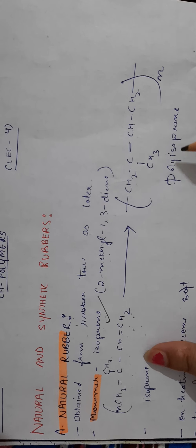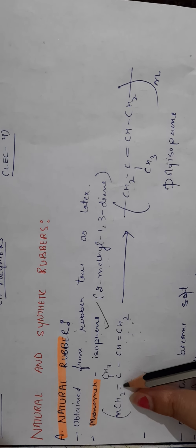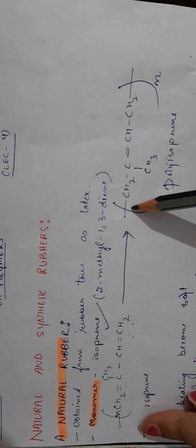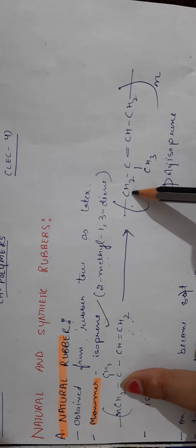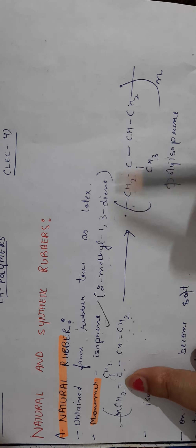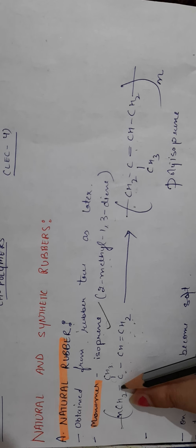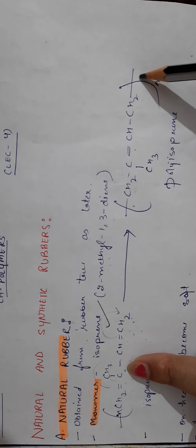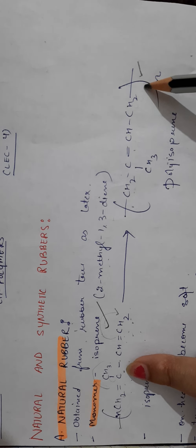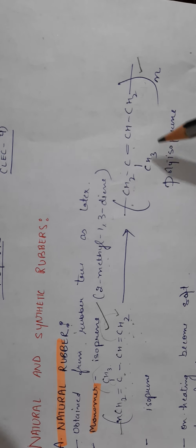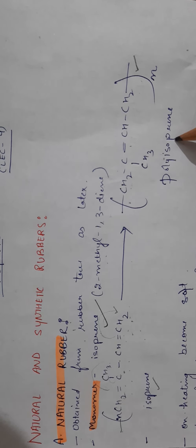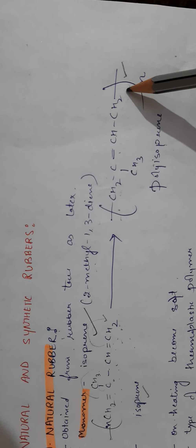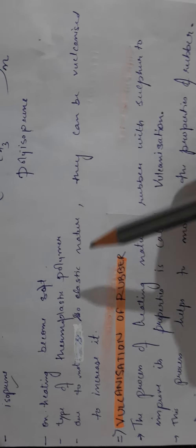On polymerizing isoprene, we get polyisoprene. During polymerization, since one carbon cannot make five bonds, the double bond shifts to the next carbon. This is the same bond-shifting method studied in organic chemistry in plus one. The result is polyisoprene with the double bond shifted to its new position, with end-to-end joining of the chain.